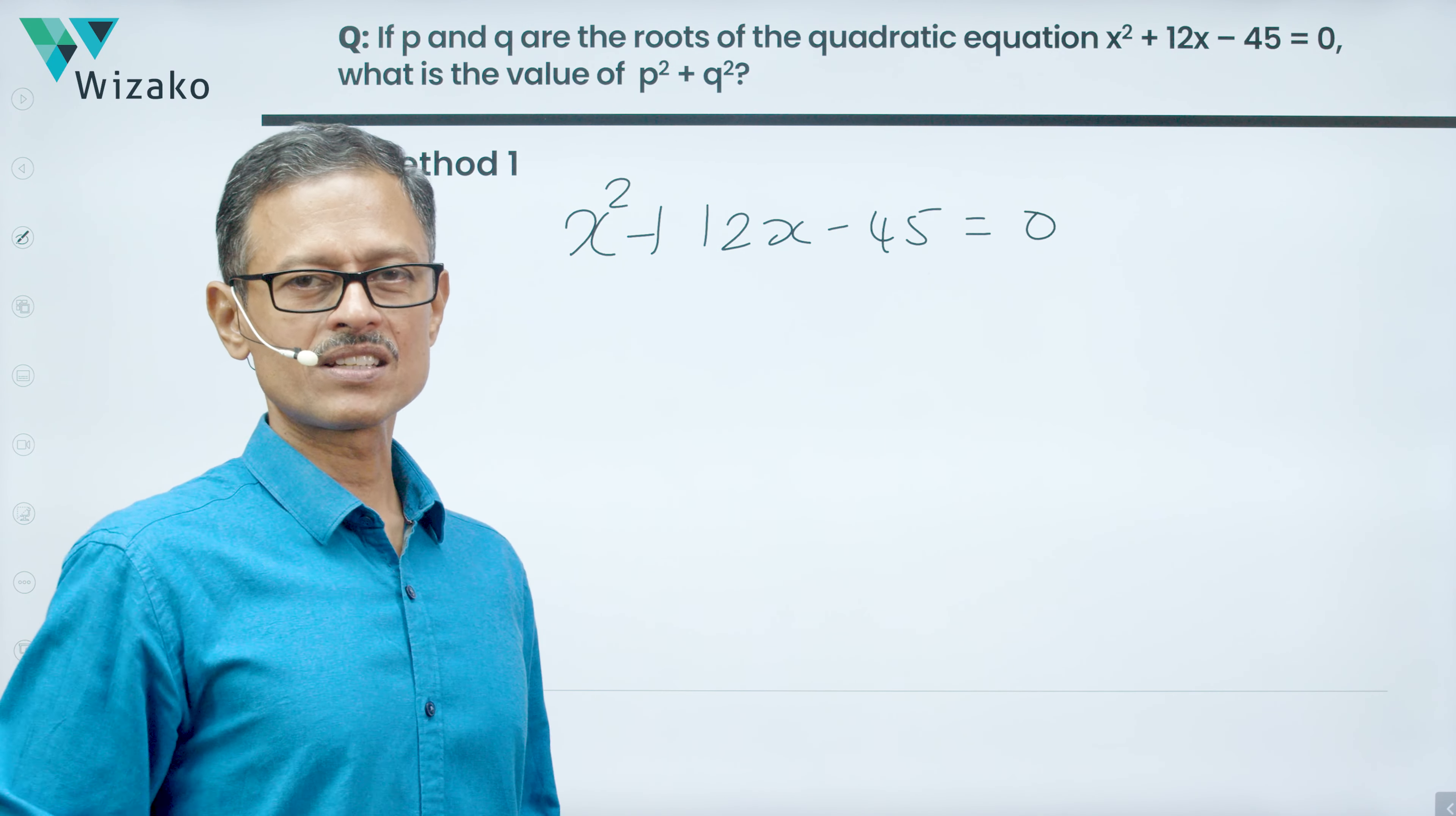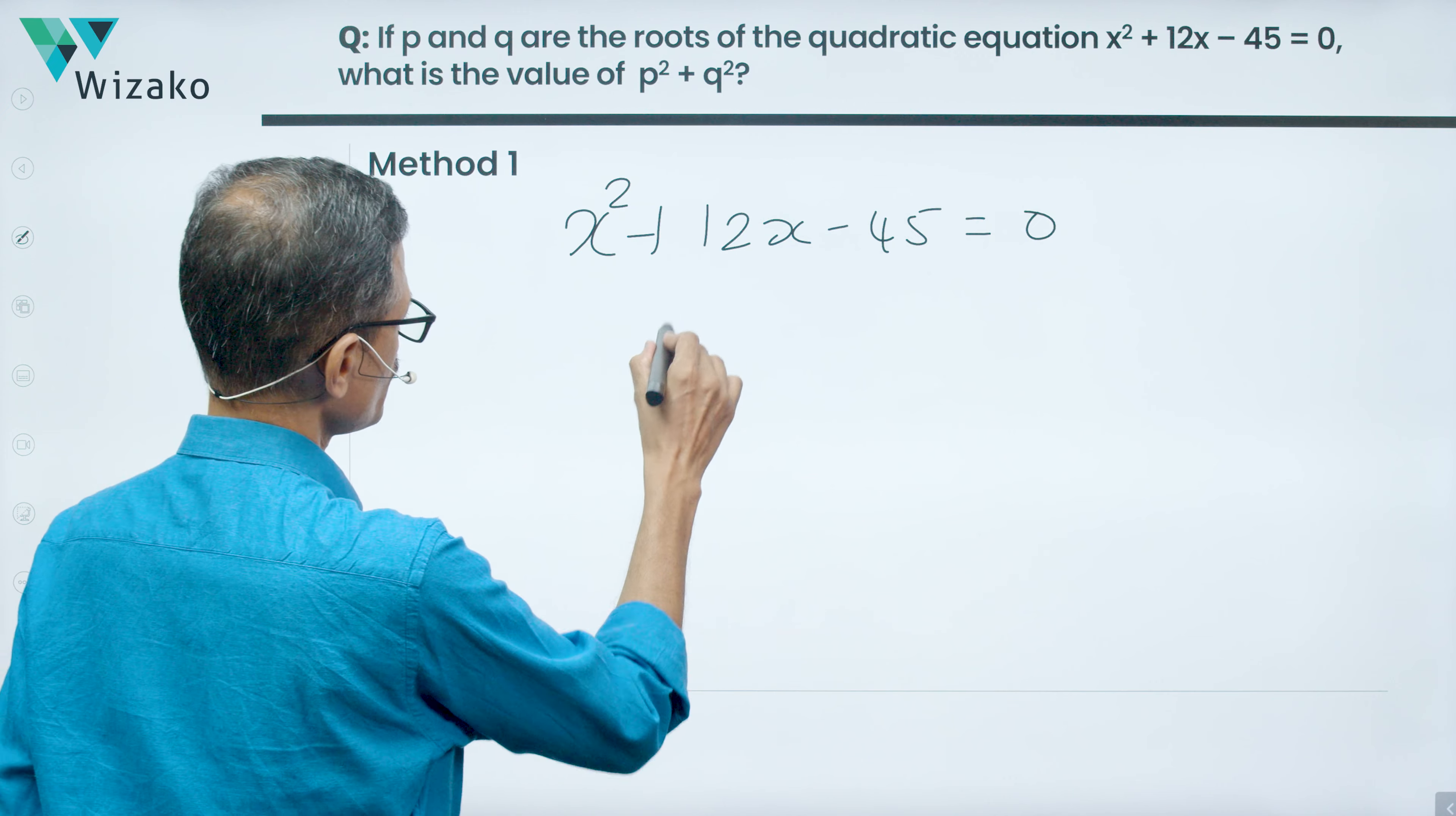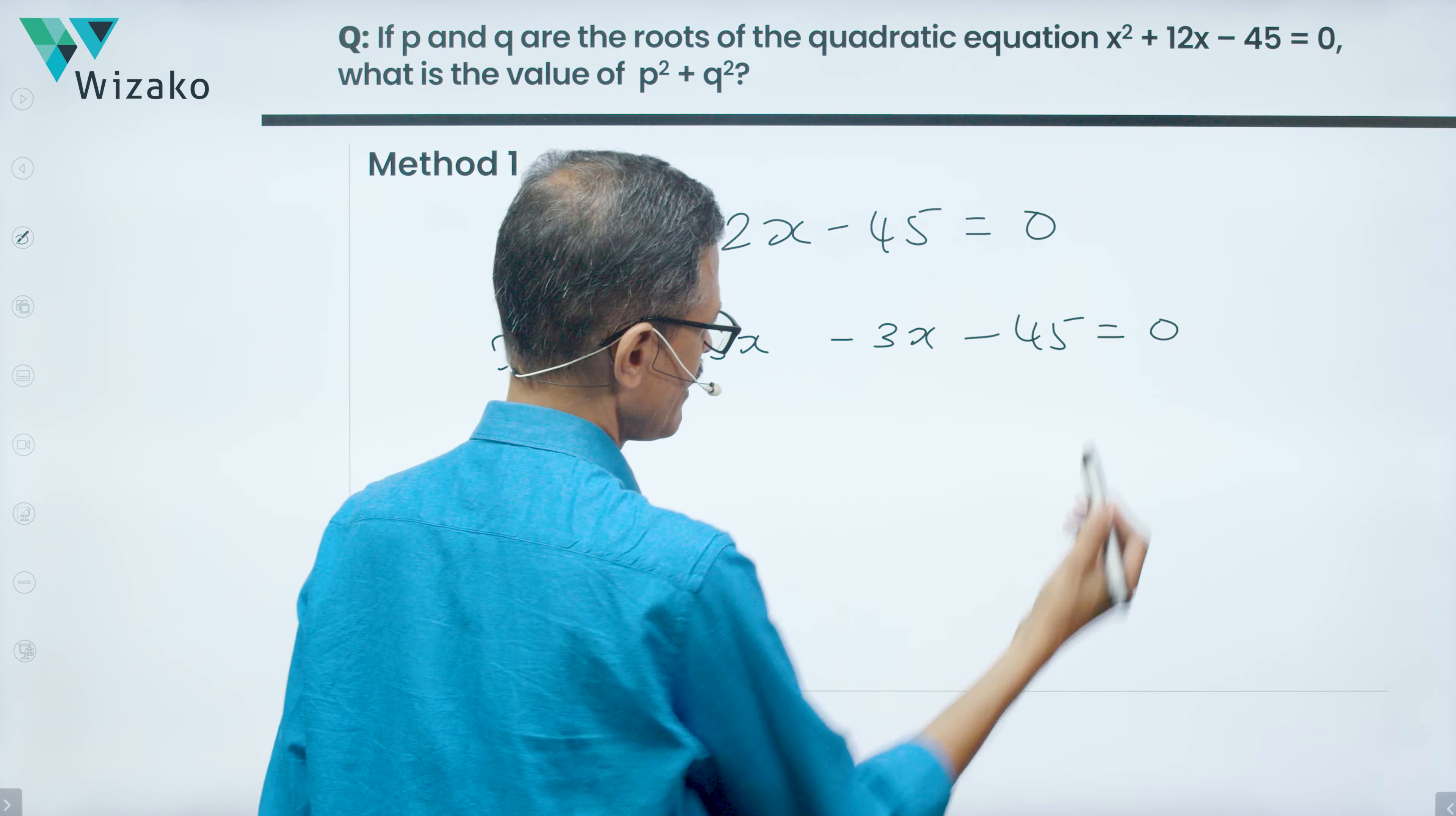The product of the first and the last term is -45. The middle term is 12. We need to break the middle term into two parts such that the sum is +12 and the product is -45. 15 times 3 is essentially 45. +15 - 3 is essentially what we are looking at to get this product of -45x² and a sum of +12x. So x² + 15x - 3x - 45 is what we have.